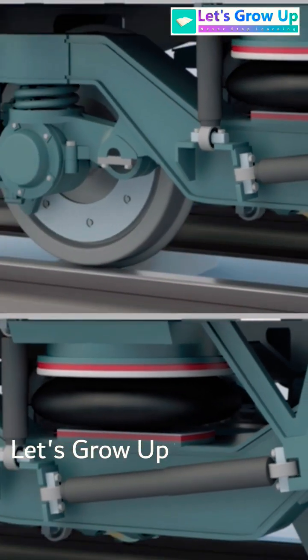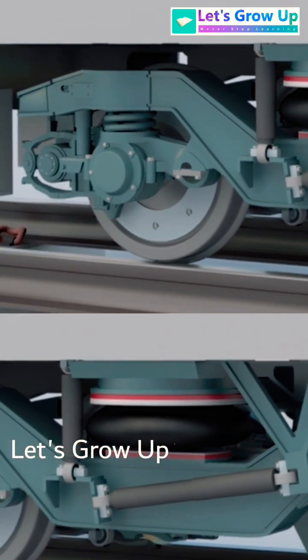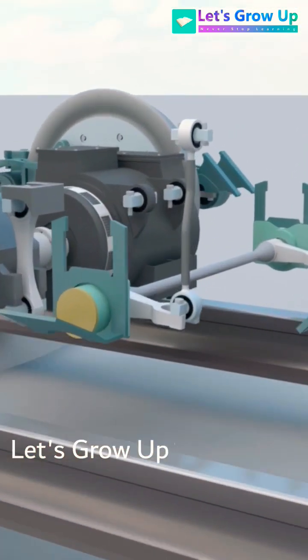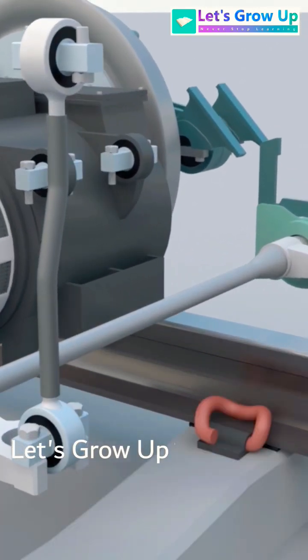Every high-speed bogey is equipped with a primary and secondary suspension system. Additionally, an anti-roll bar is installed to precisely control the suspension's motion.